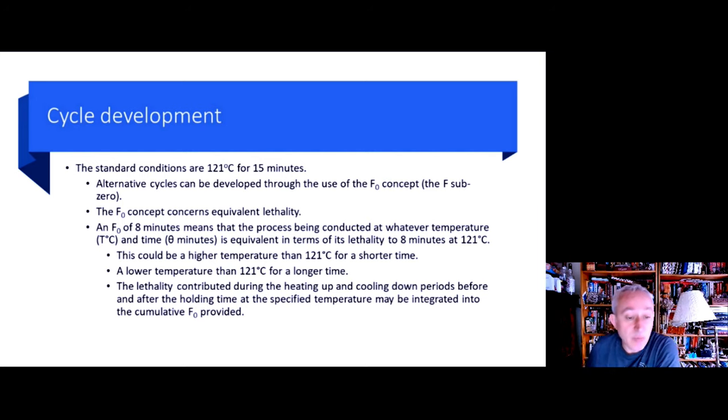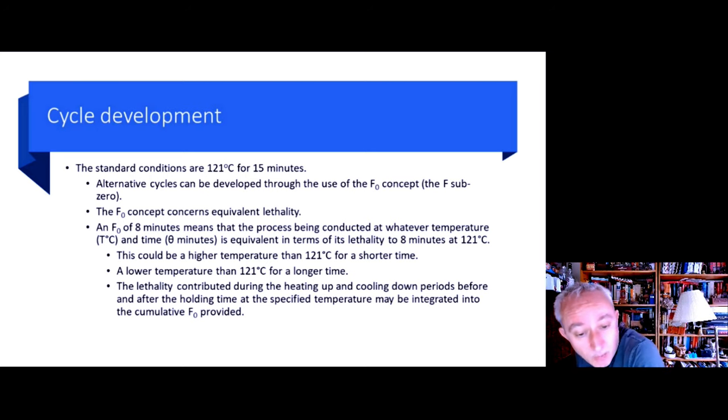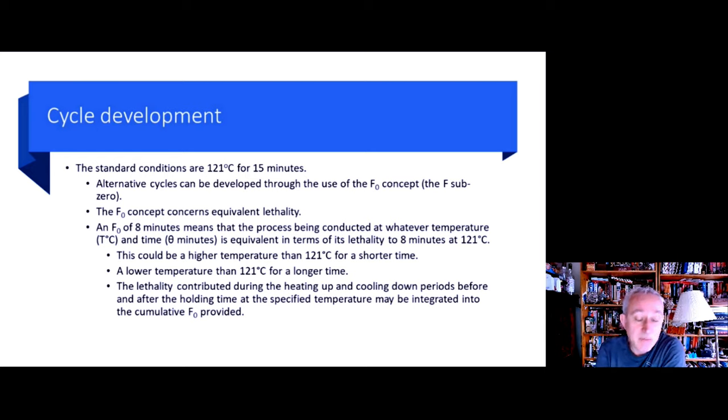So, an F sub zero of 8 minutes means that a process being conducted at whatever temperature and whatever time is equivalent in terms of lethality to 8 minutes at 121 degrees Celsius. This could be a higher temperature than 121 degrees Celsius for a shorter time, or a lower temperature than 121 degrees for a longer time. For example, if we want to run an autoclave at 110 degrees Celsius, because that is optimal for sterilizing microbiological culture media, because it's damaged at a higher temperature, we would need to know how long to run that autoclave for. So, if it takes us 12 minutes to sterilize at 121 degrees Celsius, then the F sub zero concept will tell us how long we need to run the autoclave at 110 degrees for. And that might be 20 minutes, for example.